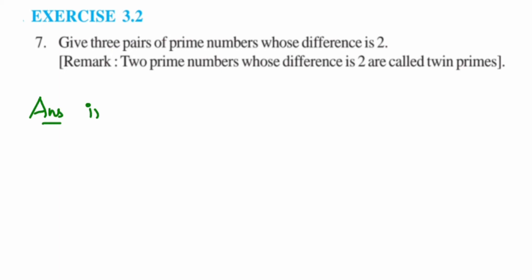The first example or the first pair will be 3 and 5. You can even start with 1 and 3, but 1 is not a prime number. It's not a prime nor composite, so that's why we want to take 3 and 5.